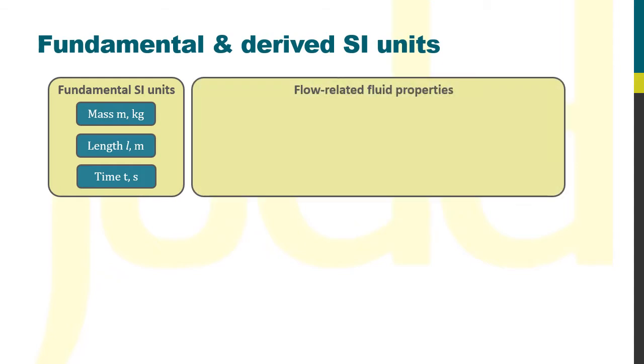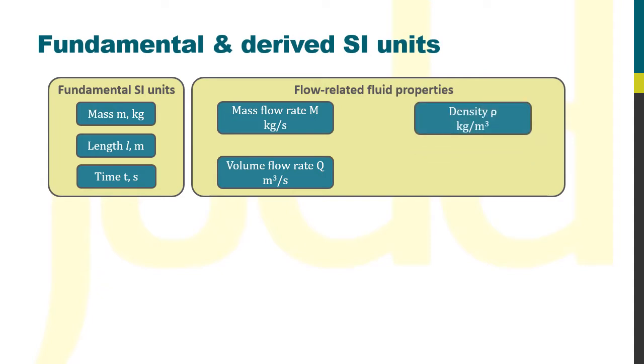For example, mass flow has units of kilograms per second and volume flow has units of meters cubed per second. Looking at the fundamental properties of the fluid itself, density has units of kilograms per meters cubed and viscosity, which is a pretty important parameter in fluid dynamics, has units of kilograms per meter per second.